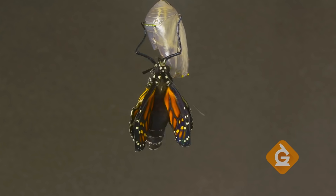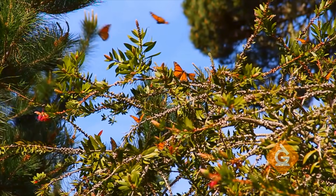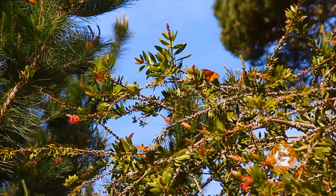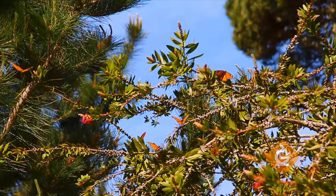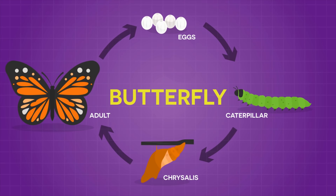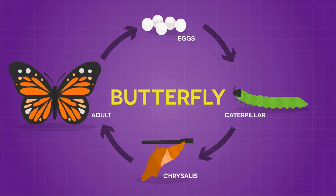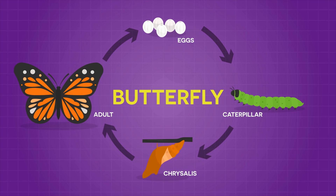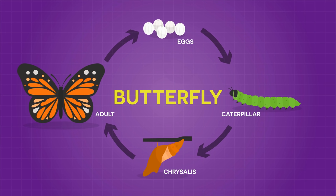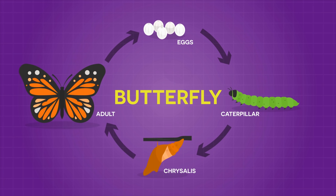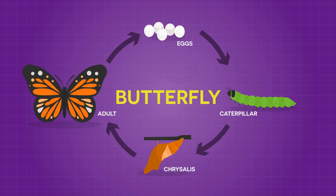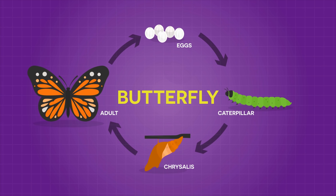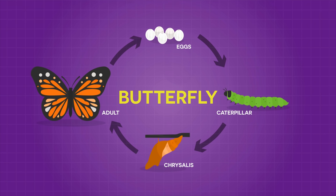Once it masters how to fly, the butterfly will look for a mate. And when a female lays its eggs, the life cycle will start all over again. We can represent all those stages in a diagram like this — it shows each stage in order and it's in the shape of a circle because a life cycle repeats again and again. As an adult butterfly dies, new ones are born and the cycle continues.